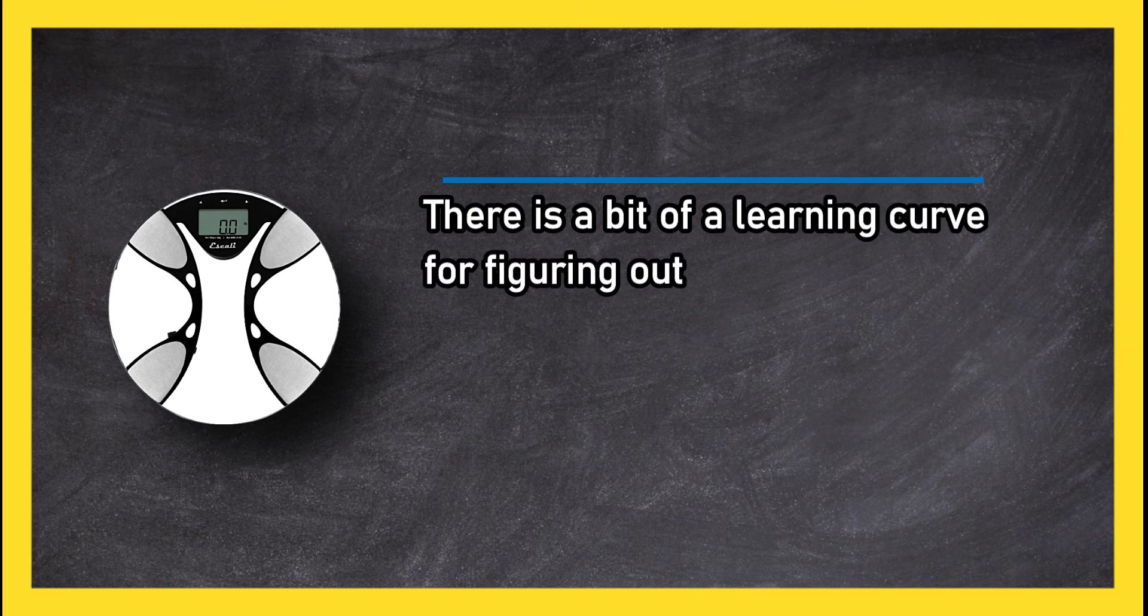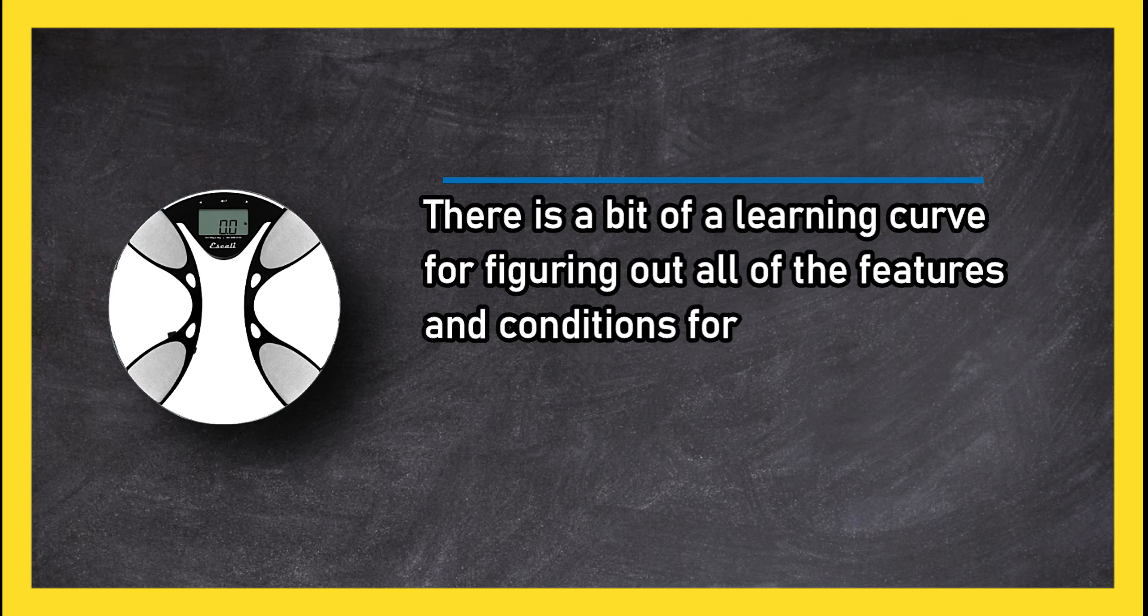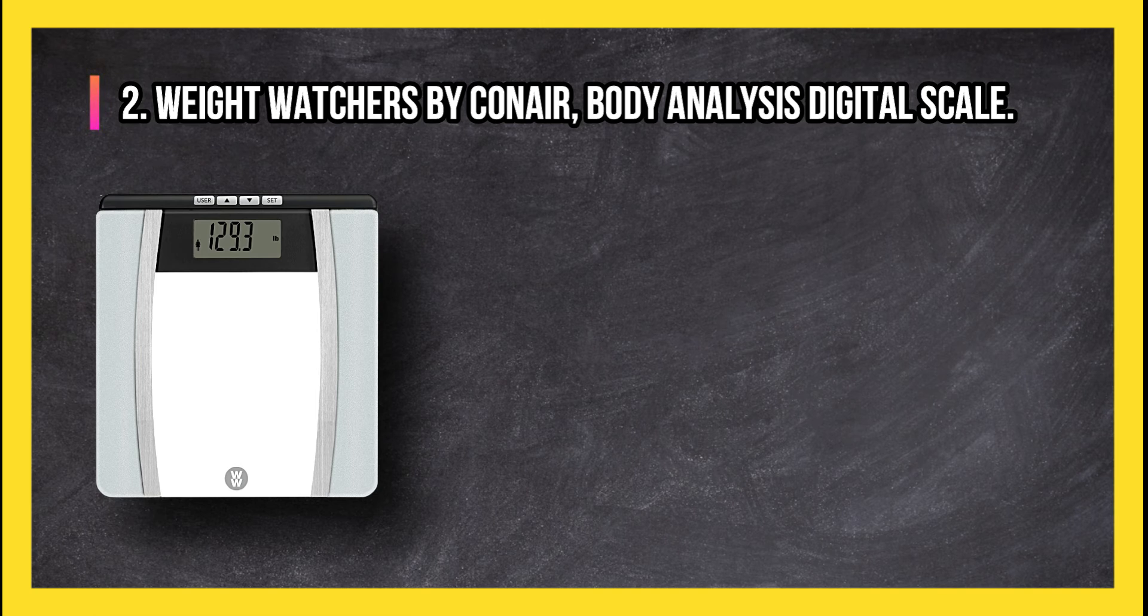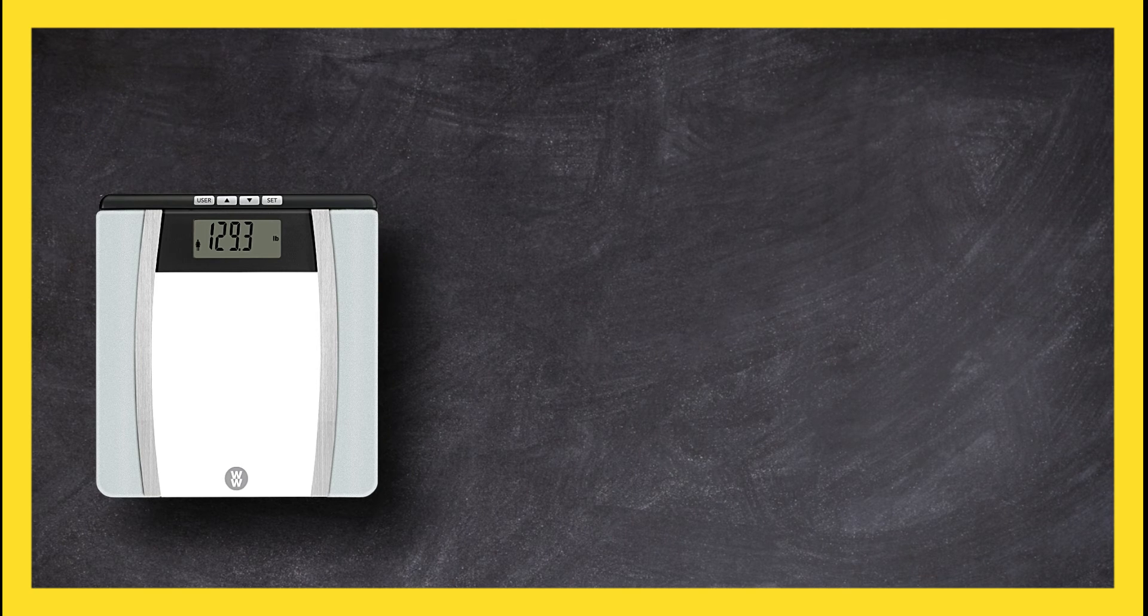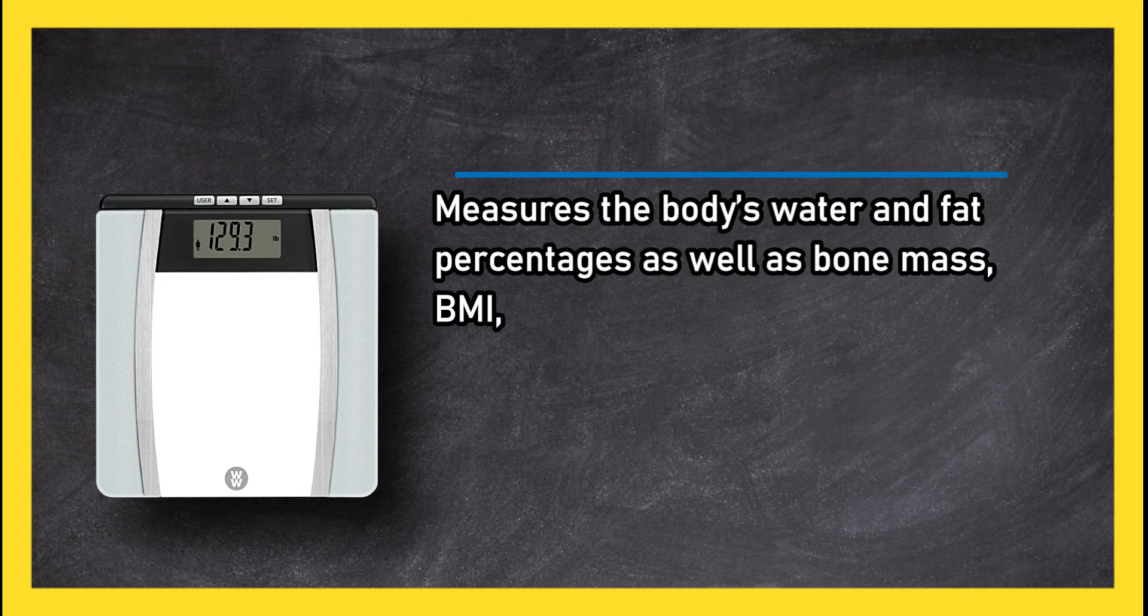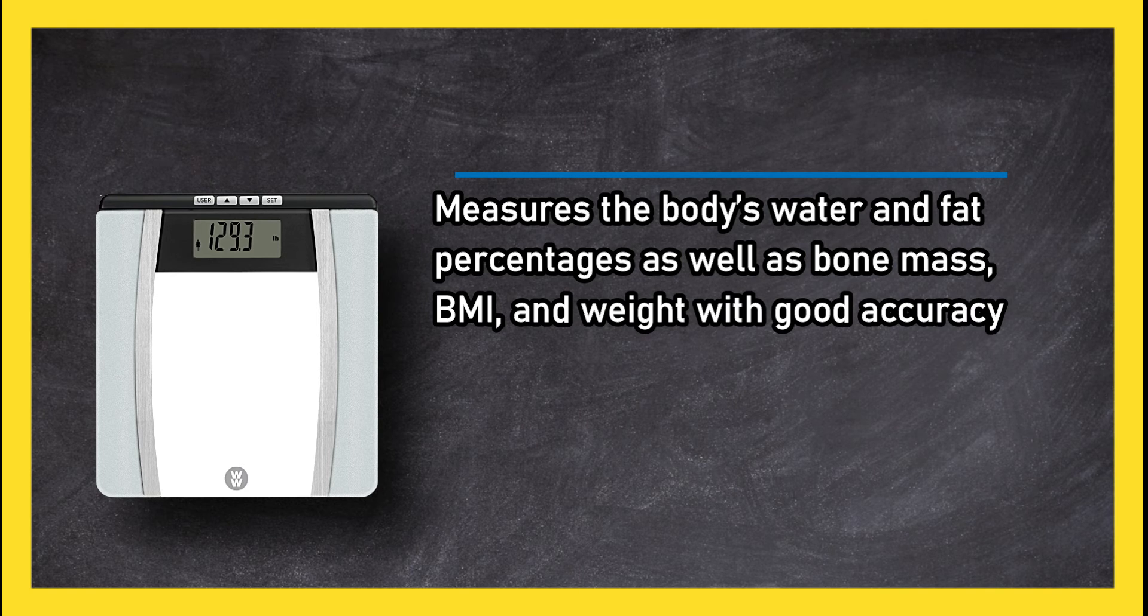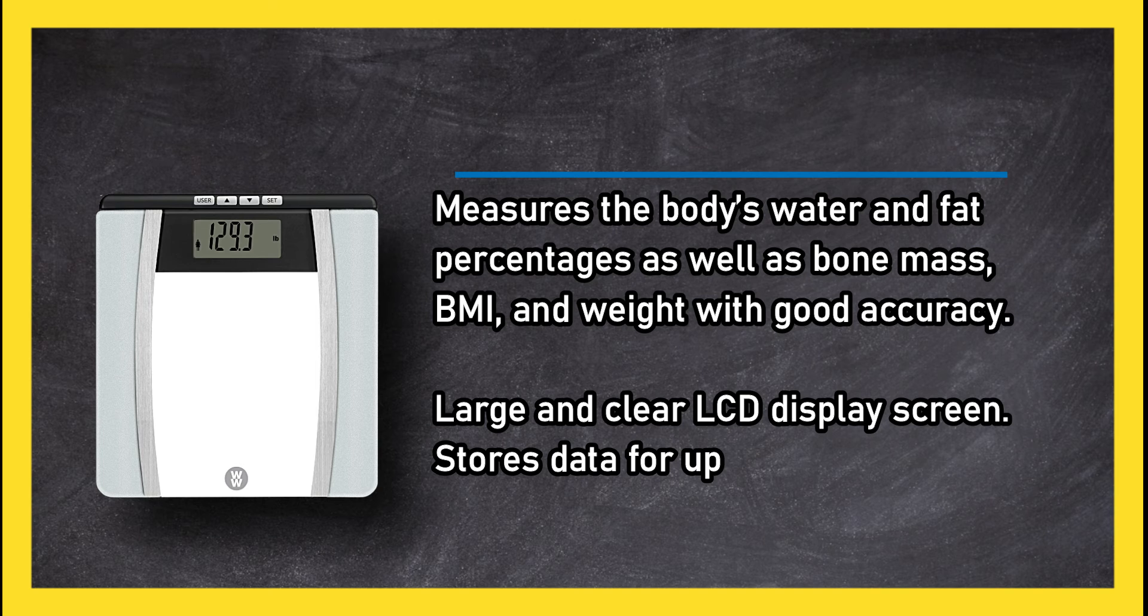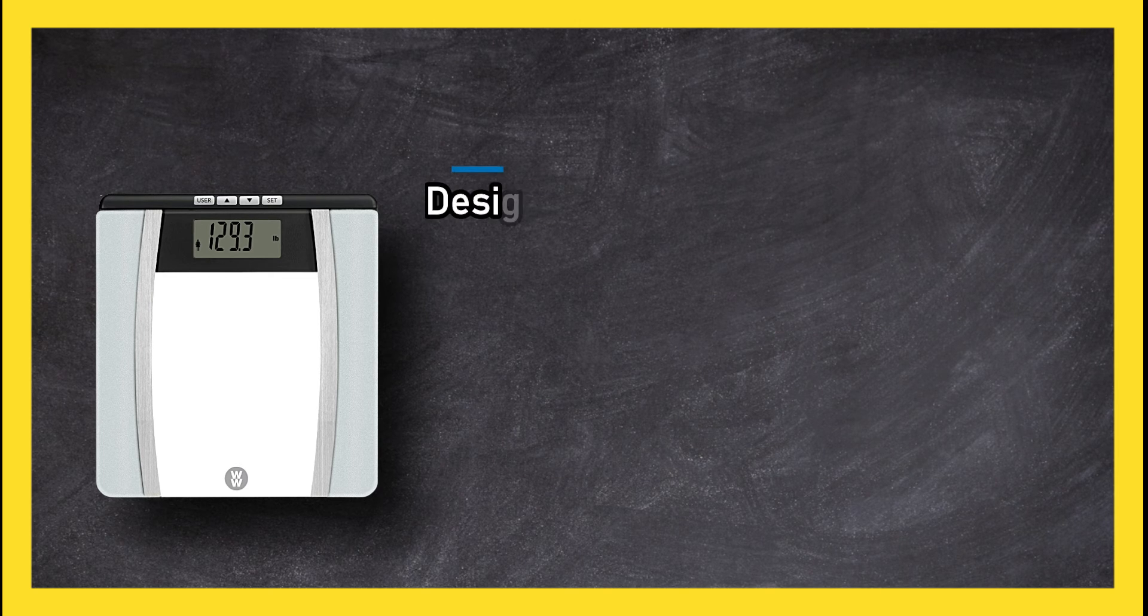At number two, Weight Watches by Connor Body Analysis Digital Scale measures the body's water and fat percentages, as well as bone mass, BMI, and weight with good accuracy. Large and clear LCD display screen, stores data for up to four users, design is slim and sleek.